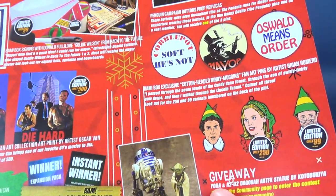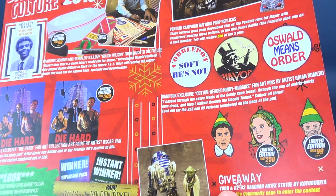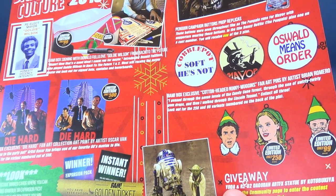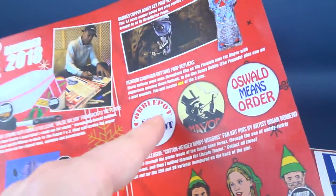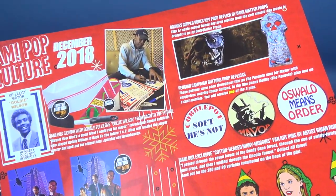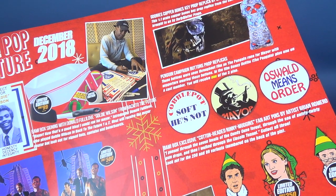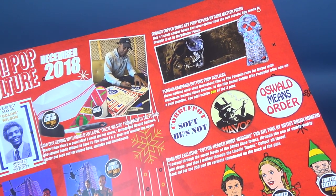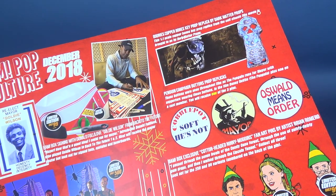We also got ourselves the BAM exclusive cotton-headed ninny muggins. I passed through the seven levels of candy cane forest through the sea of swirly twirly gumdrops and then walked through the Lincoln Tunnel. Collect all three, look out for the 250 and 99 variants numbered on the back of the pin. There was also the Oswald Cobblepot Mare. This is the penguin campaign button prop replicas. These buttons were seen throughout the film as penguin runs for mayor with supporters wearing these buttons. Danny DeVito the penguin pins one on a cast member. You'll receive one of the three pins. And also there was the Goonies copper bones key prop replica from dark matter props. This one-to-one scale copper bones key prop replica from the cult classic 80s movie is brought to us by dark matter props.